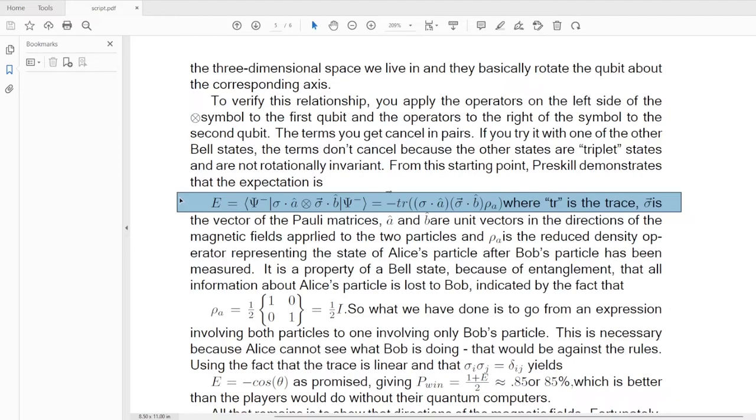So what we've done is go from an expression involving both particles to one involving only Alice's particle. This is necessary because Alice cannot see what Bob is doing. That would be against the rules. Using the fact that the trace is linear and that the product of two sigma matrices is only non-zero when the matrices are identical, yields the formula for E minus cosine theta, as promised, giving a win probability of 1 plus E over 2, which is about 85.85 or 85%. So this is better than they would have done without the quantum computers.